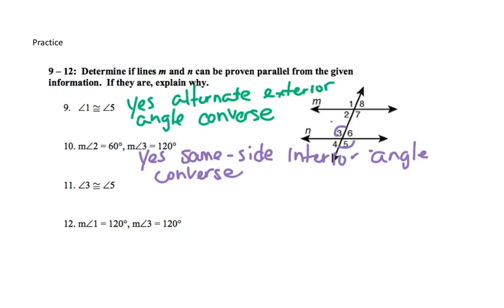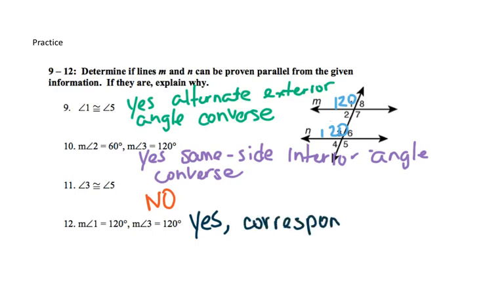Angles 3 and 5: angle 3 touches N and angle 5 touches N — this would be a no; they are congruent but both on the same line. Angles 1 equals 120 and 3 equals 120: because they are both 120 they are corresponding, and corresponding angles have to be congruent, so this is also a yes — corresponding angle converse.